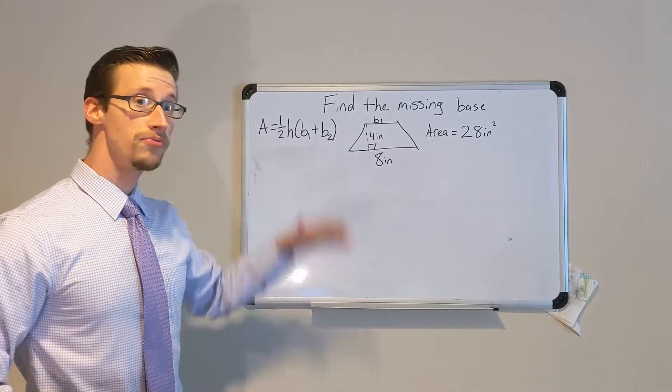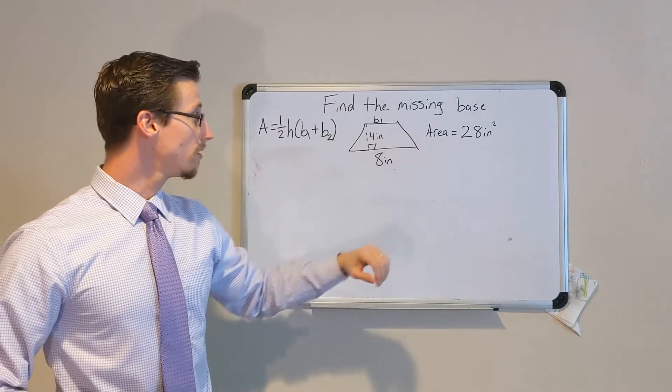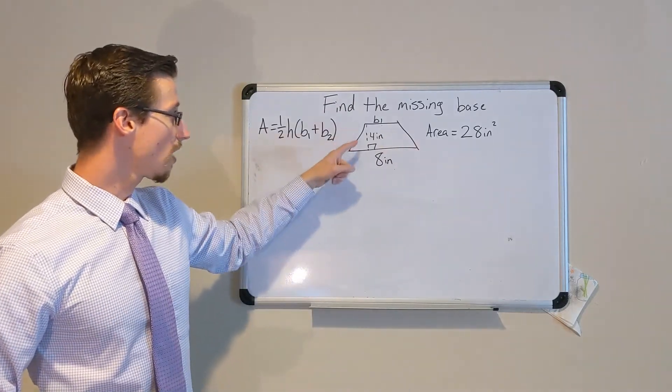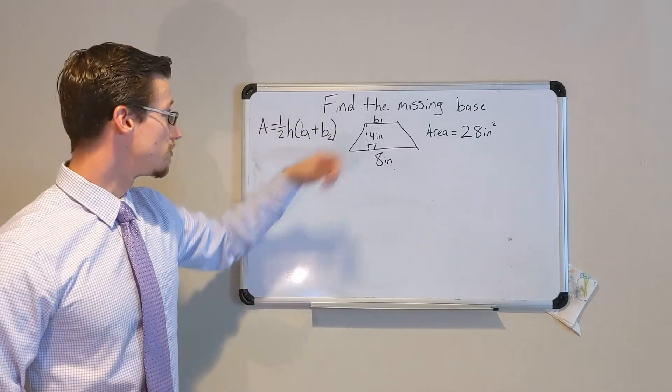Here we have a trapezoid and we are trying to find the missing base of the trapezoid. We know the area, we know one of the bases, we know the height. The only thing that's missing is the second base. In this case it's base 1.